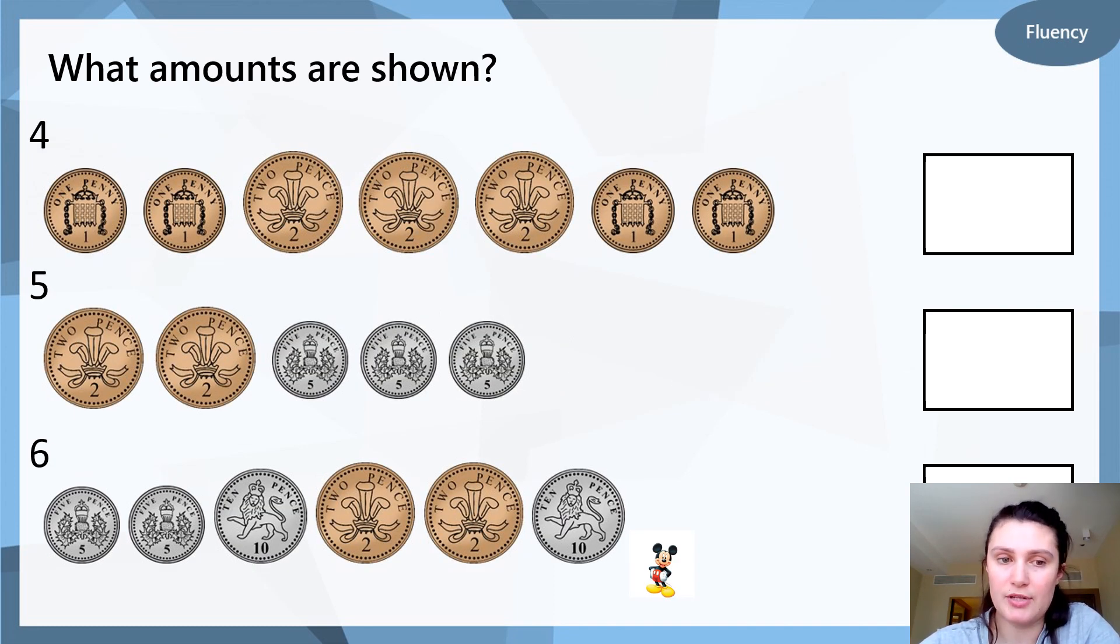Okay, now it gets a bit trickier because the numbers are getting mixed up. So for question four, we have some 1p coins and some 2p coins. So we're going to have to count up the 1p coins, count up the 2p coins and add them together. For question 5, we have to add the 2p coins and the 5p coins and then add them together. For question 6, we have to count the 2, the 5, and the 10p coins and add them together. Pause the video now while you answer question 4, 5 and 6.